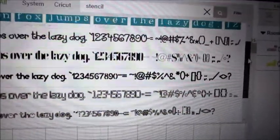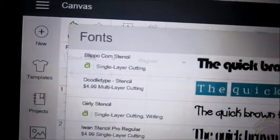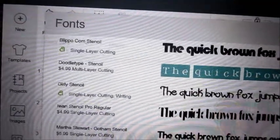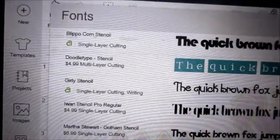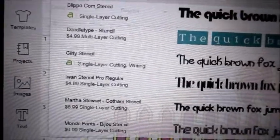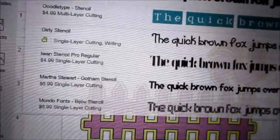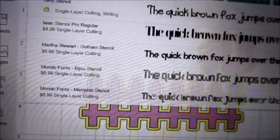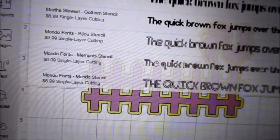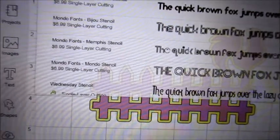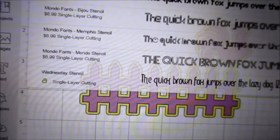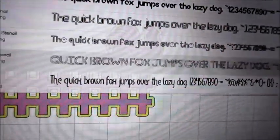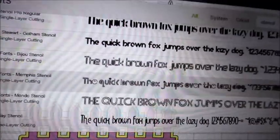Let me kind of scroll down. There are some and I'm thankful for those. There's a little scroll bar to give you a feel for how many there are. So we have the Blippo Corn Stencil that is free with my $9.99 Cricut Access a month. The Doodle Type is $4.99. The Gurley is free. The Ewan is $4.99. Martha Stewart is $6.99. Mondo is $6.99, and another Mondo is also $6.99. The Wednesday stencil is free. So there's a few free ones and there's several that cost.